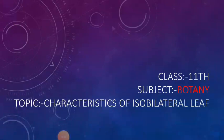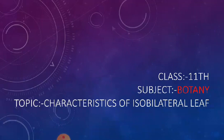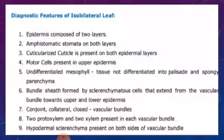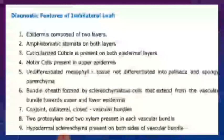I hope you all are fine and fantastic. Today our topic in botany is the characteristics or diagnostic features of the isobilateral leaf. Previously we dealt with the structure of the dorsal ventral leaf and the anatomy of the isobilateral leaf. The isobilateral leaf has two sides both receiving light from the sun, and these leaves are usually monocotyledons.